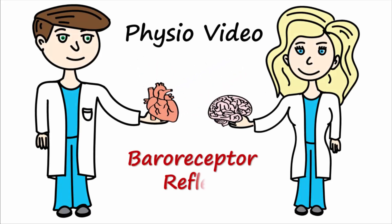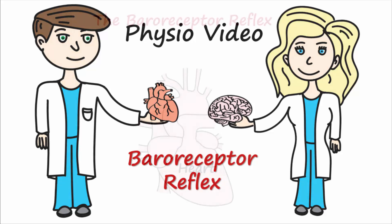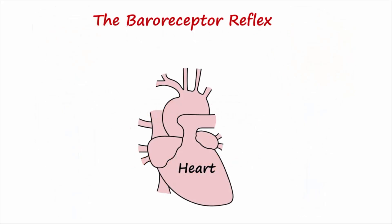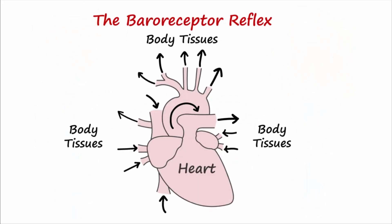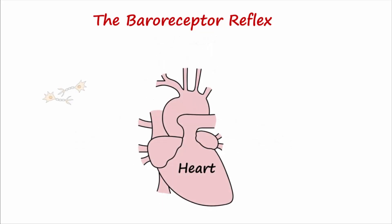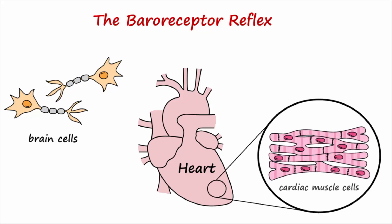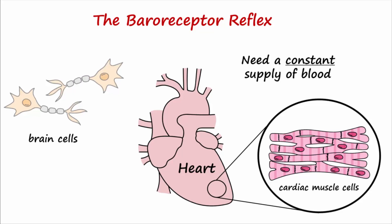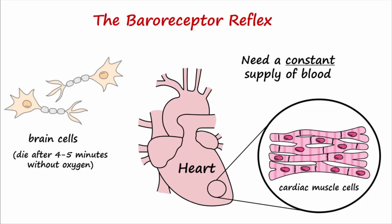Welcome. Our topic today is the baroreceptor reflex. The heart creates sufficient pressure to ensure blood flow to the body's tissues is maintained. Some tissues, like cells of the brain and cardiac myocytes, cannot survive very long without a constant supply of blood. For example, brain cells begin to die after only four to five minutes without oxygen. The baroreceptor reflex is involved in the short-term maintenance of blood pressure, which is necessary for vital tissue perfusion.